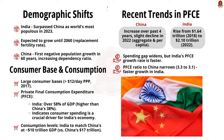In 2023, India surpassed China as the world's most populous country. China's birth rate and total fertility rate have declined, leading to its first negative population growth in 60 years and an increasing dependency ratio. Conversely, India's population, despite reaching replacement fertility level of 2.1 children per woman, is expected to grow until around 2060. These demographic changes have profound implications for domestic consumption in both countries.